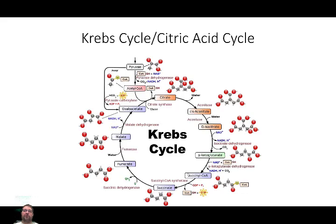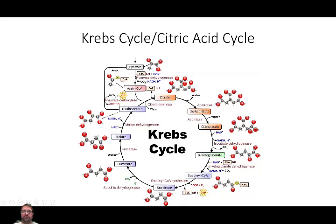Next time, we're going to talk about the Krebs cycle, or the citric acid cycle. This occurs when oxygen is present. You can see at the top of this diagram that pyruvate is coming from glycolysis, which we just discussed. So next time, Krebs cycle.